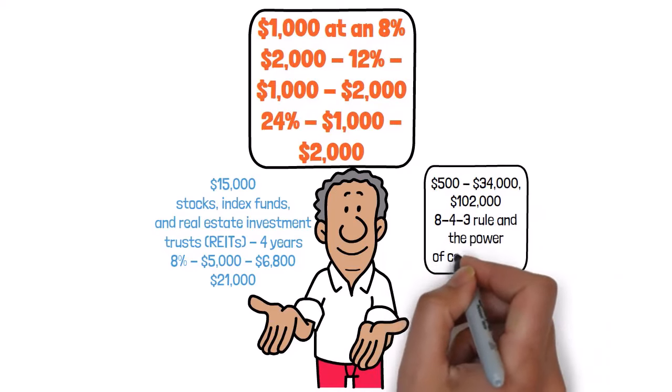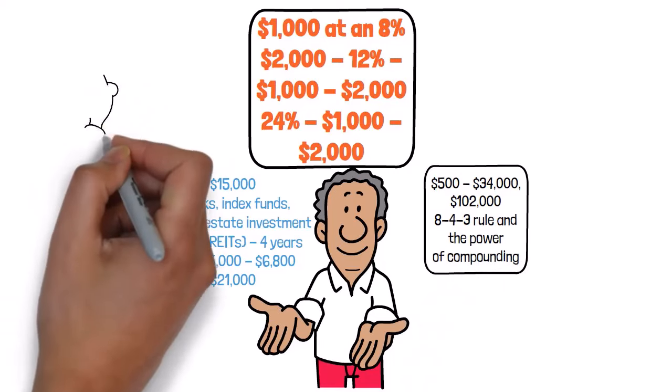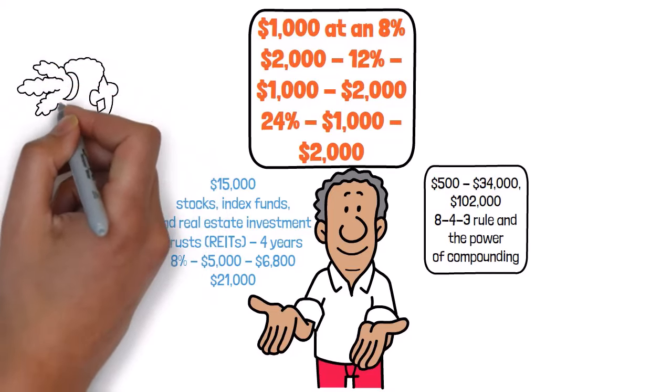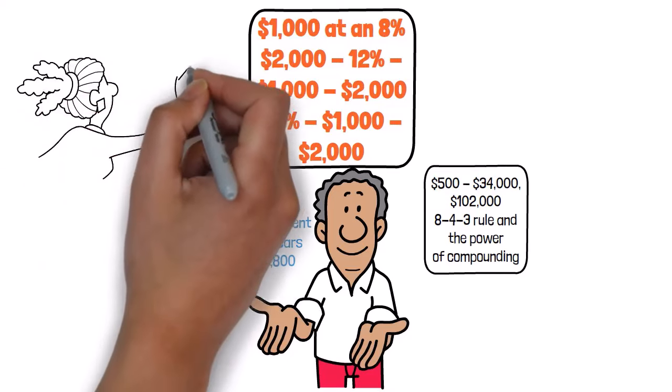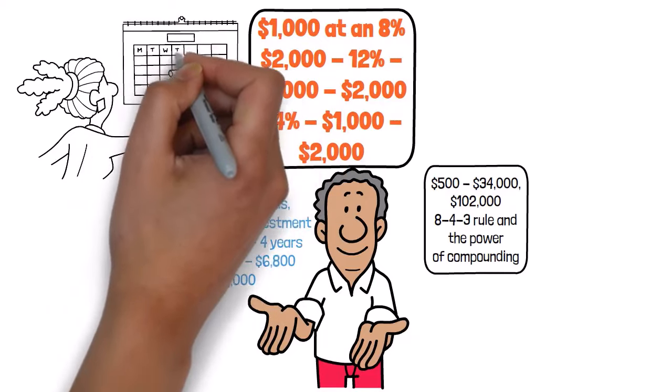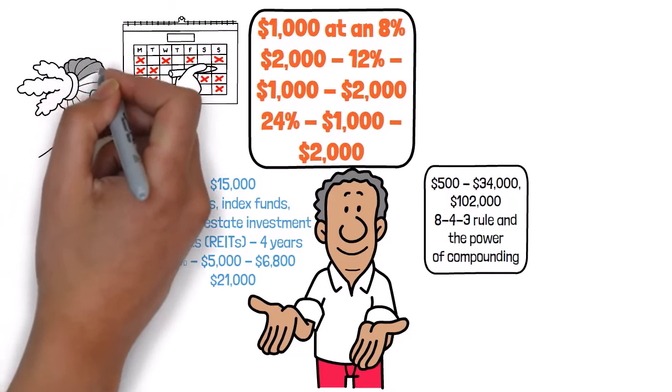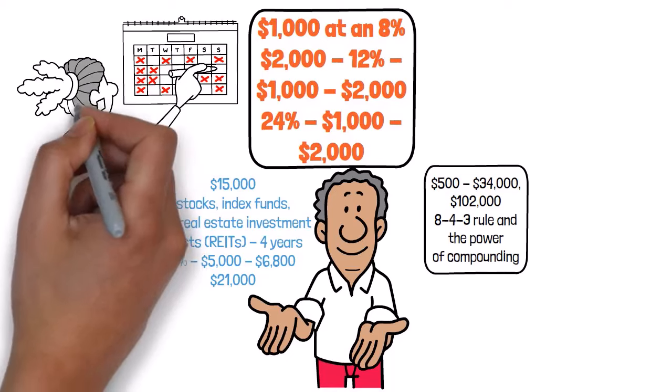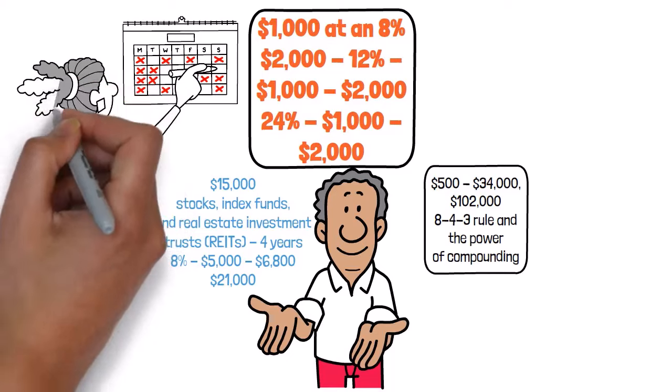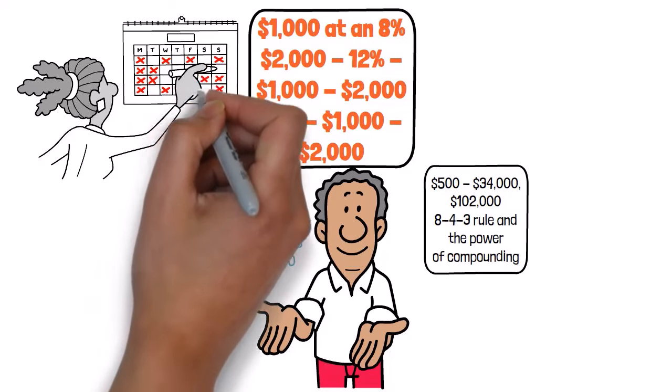The 843 rule isn't just about doubling your money, it's about harnessing the power of compounding to build wealth over time. Sure, doubling your money in 3 years sounds impressive, but imagine the possibilities if you keep reinvesting those earnings year after year. And let's not forget about the different aspects of compounding. It's not just about the rate of return, it's also about the frequency of compounding. Whether your interest is compounded annually, semi-annually, or even daily, each compounding period has the potential to turbocharge your earnings.